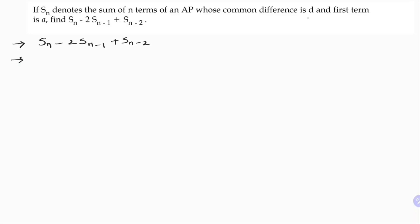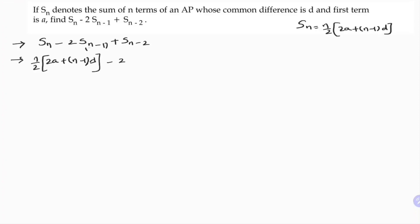The Sn formula is n/2 into (2A plus (n minus 1) into D). So directly applying Sn formula: n/2 into (2A plus (n-1)D) minus 2 times S(n-1).